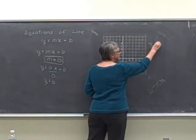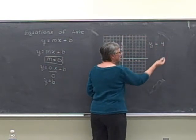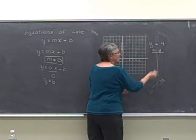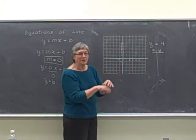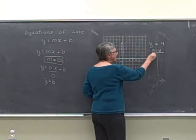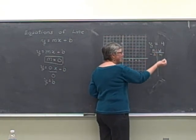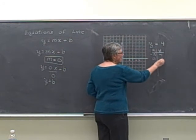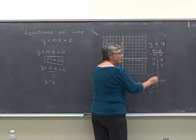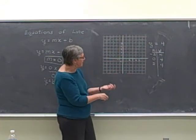If I have the equation y equals 4. If I'm looking at a table of values, it means that no matter what I choose for x, y is going to be 4. If I choose x to be negative 2, y is 4. If x is 0, y is 4. If x is 2, y is 4. The y value never changes.